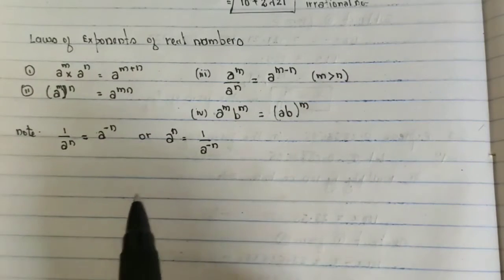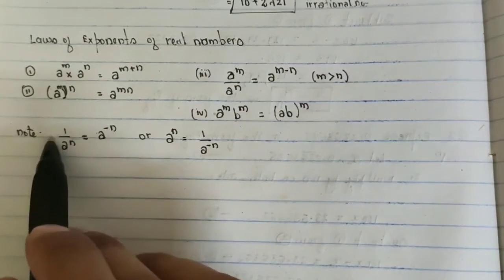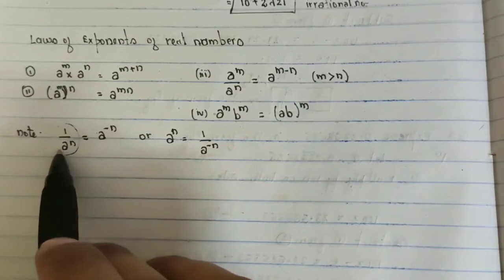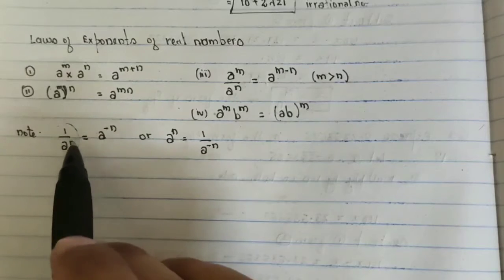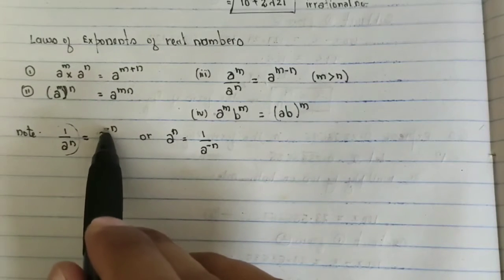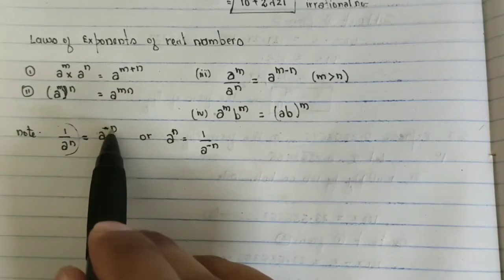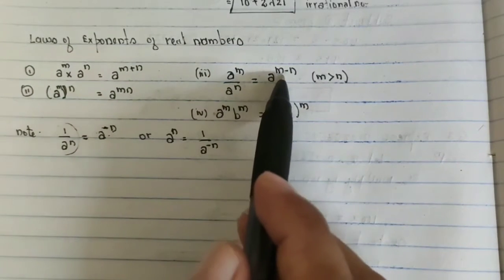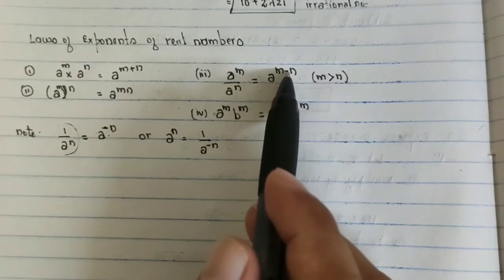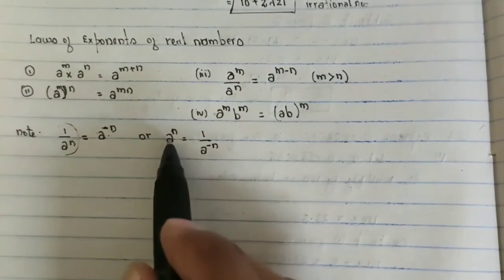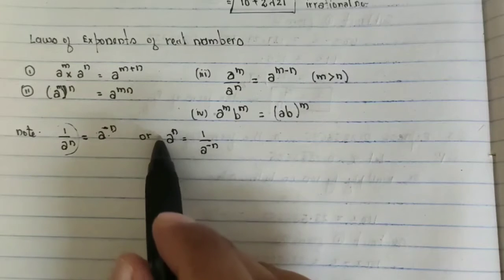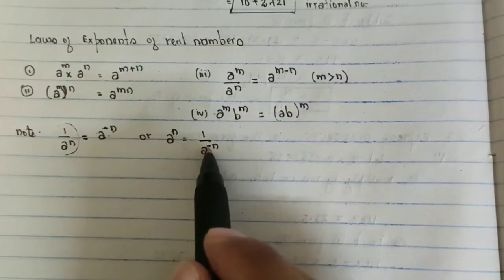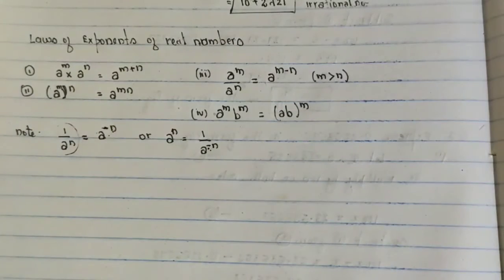Here is an important note: if a number is in the denominator, you can bring it to the numerator by adding a minus sign in front of the exponent. Conversely, if a number is in the numerator, you can write it in the denominator by adding a minus sign to the exponent. I hope this is clear.